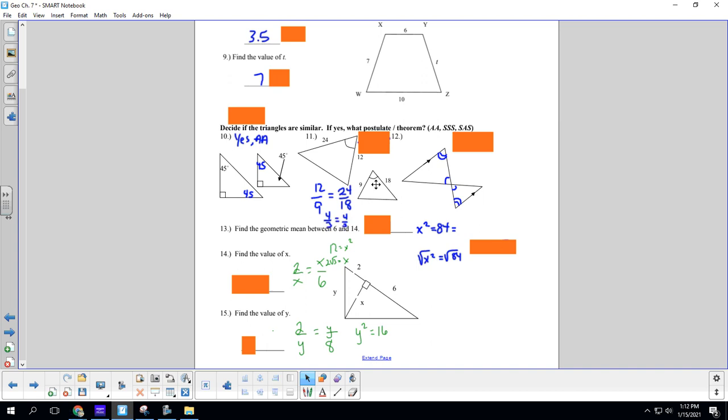Number 11. These two triangles, we have to set up a proportion. So we take our small side over our other small side, equal to our bigger side over our other bigger side. And then reduce. And we see we get 4 thirds equal to 4 thirds. So this would be yes by proportional side, congruent angle, proportional side. Side, angle, side.